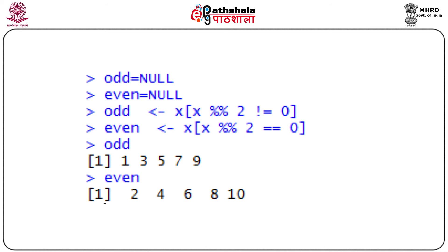Another way to look at this problem: we assign to the 'odd' variable those values of x for which dividing by 2 gives a remainder not equal to 0, and assign to 'even' those values for which the remainder is exactly 0. This gives us the odd and even series among 1 to 10. Notice how differently we can handle the same problem.